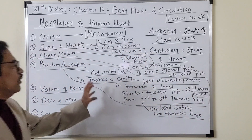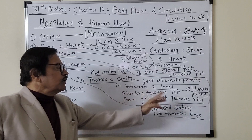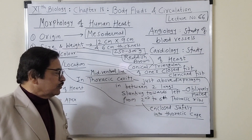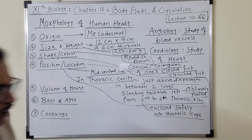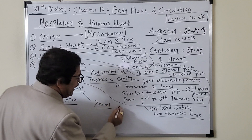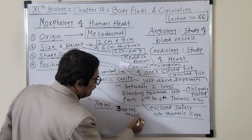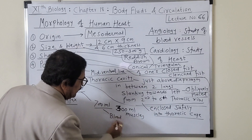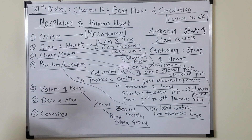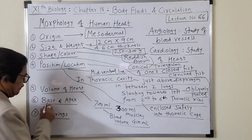The heart is enclosed very safely along the mid-ventral line in the thoracic cavity, in between the two lungs, slanting towards the left, obliquely placed, from the second to sixth thoracic ribs — important for MCQs. The volume of the heart is 700 ml, but out of that 300 ml is the thickness of the muscles, and therefore the actual blood volume is 400 ml.